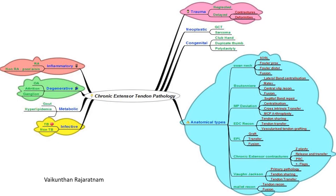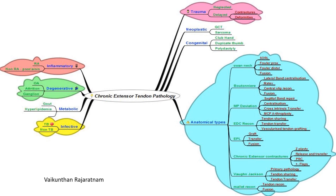In this flow chart, I'm giving an overview of how interesting extensor tendons are, both in forms of acute injuries and chronic injuries secondary to neglect and lack of treatment, and pathologies that tend to produce extensor tendon problems. It's not very comprehensive, but it gives you an idea of how to approach especially chronic extensor tendon pathologies.